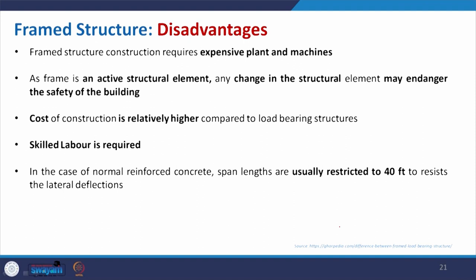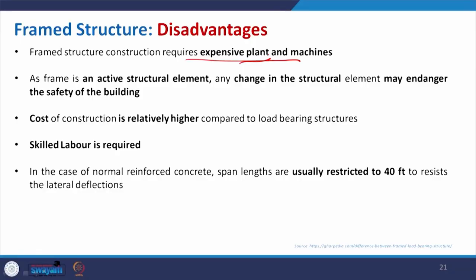Coming to the disadvantages of frame structure — frame structure definitely requires some expensive plant and machines, because whenever you go for higher height you need equipment and machines to bring your material to upper storeys — different cranes, different lifts. Those machineries are required, which was not much required for the common load bearing structure because of the low height that can be managed with minimal scaffolding. But in this case it will require proper machinery to make your construction easy, as well as you also need to procure different kinds of material in constant supply.